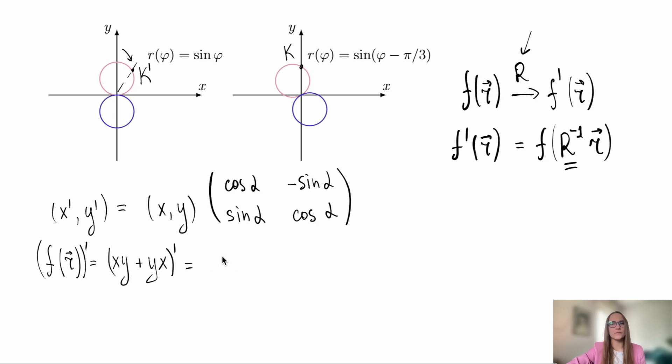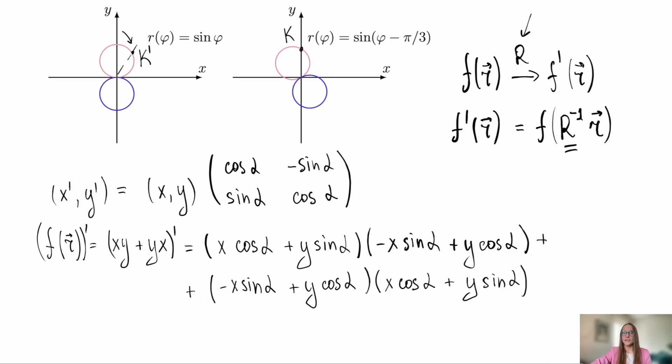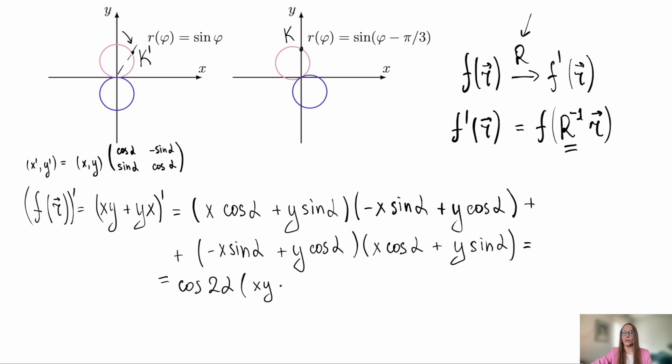Rotating functions is very simple. We just substitute the expressions for x and y rotated by an angle alpha, meaning we express them using the rotation matrix. After expanding the brackets, we obtain the following expression.